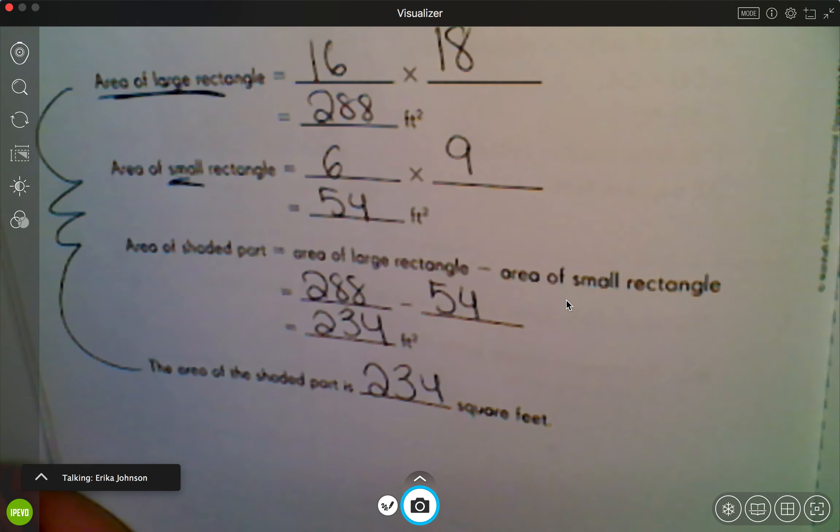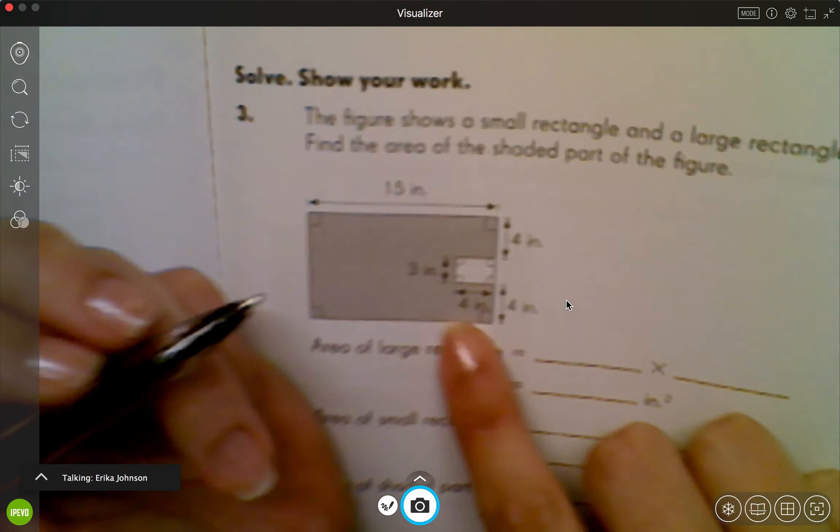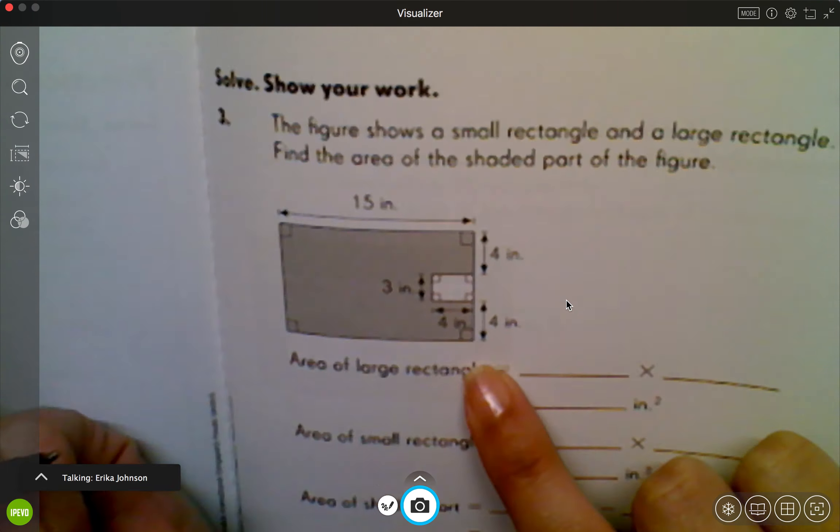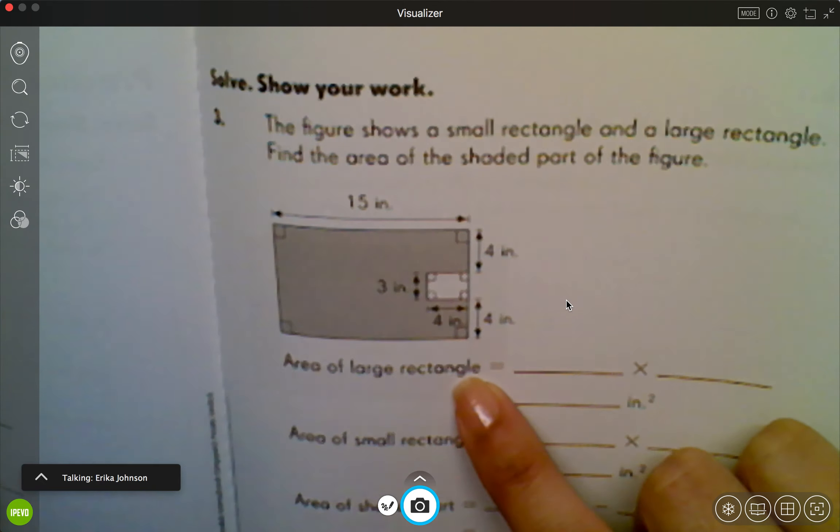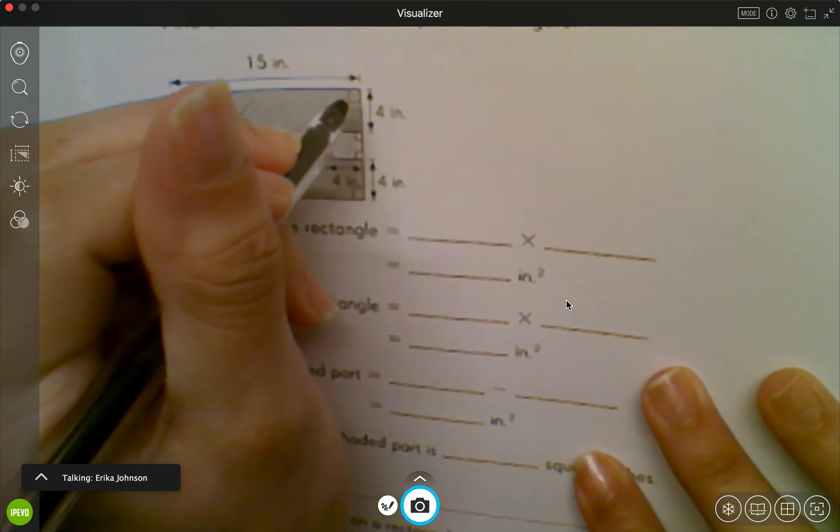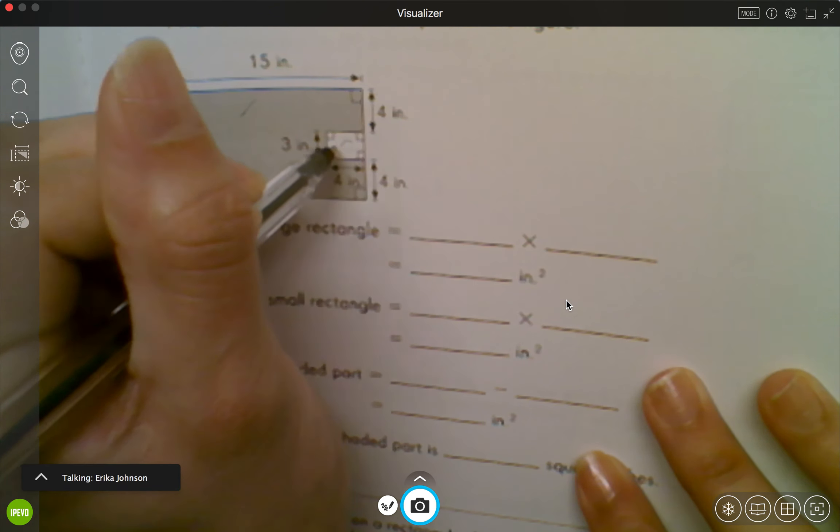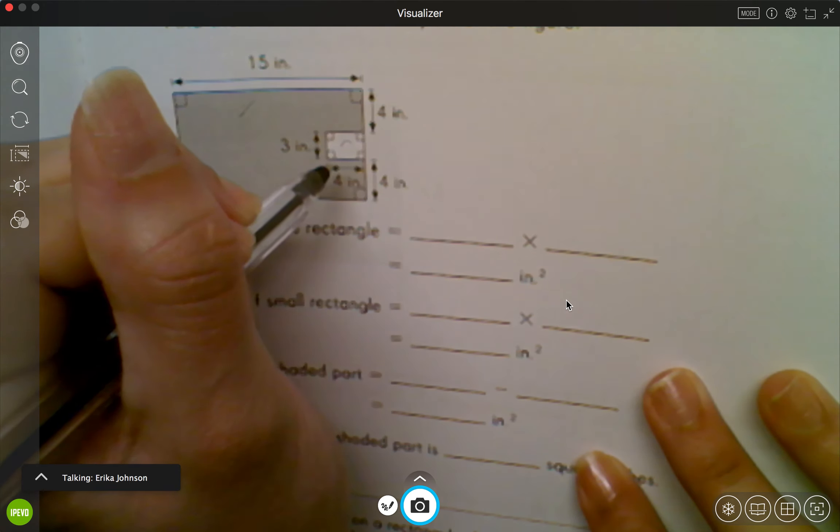All right, let's come over here and let's solve this one. This one says the figure shows a small rectangle, again I see that little one, and a large rectangle, which is the whole thing. Then we need to find the area of the shaded figure. This is the same thing we just did. So I'm gonna first find the area of the whole entire thing, then I can find the area of this little piece and then get rid of it, and if I get rid of it, whatever's left is that shaded part.